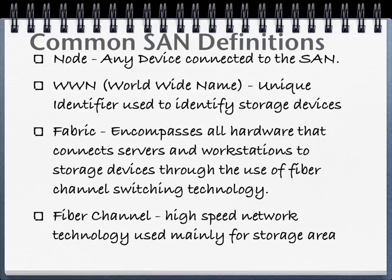The other very important definition is what we call a worldwide name. The worldwide name is a unique identifier used to identify every storage device attached to the SAN. This is generally six numbers, and you can think of this as an IP address. For reasons of troubleshooting, the first thing people in the SAN world ask is, 'What's the worldwide name of the device you're having a problem with?' That's how storage administrators uniquely identify nodes and devices on the storage area network — similar to an IP address.